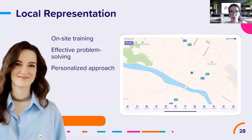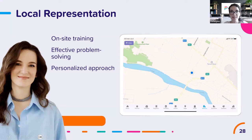Second, effective problem solving. Issues can arise at any time, and it's very important to resolve them quickly to maintain productivity. Having support that communicates in the local language can make this process significantly smoother, resulting in faster resolution times and less downtime for your team. Third, personalized approach: local representatives have a better understanding of regional business customs, legal regulations, and market dynamics. They can provide insights and advice tailored to your local operations, helping you leverage the CRM system to its fullest potential.